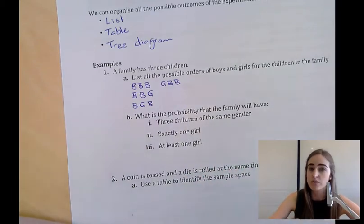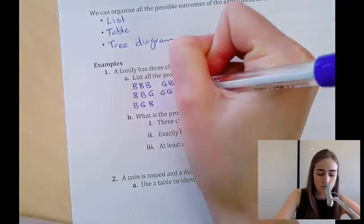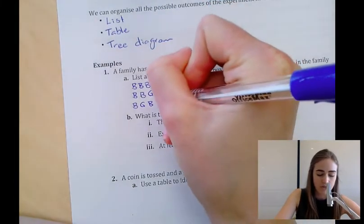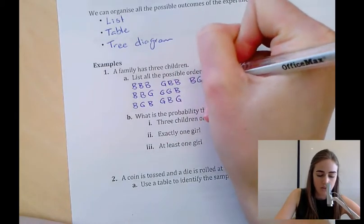Let's look if we have two girls and one boy instead. We'd have girl, girl, boy, or girl, boy, girl, or boy, girl, girl.